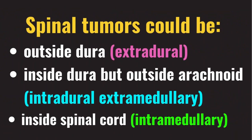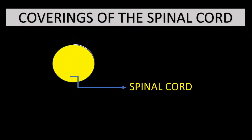So, the spinal tumors could be outside the dura, when they are called extradural tumors; inside the dura but outside the arachnoid, when they are called intradural extramedullary tumors; and they are called intramedullary if they are present inside the spinal cord.